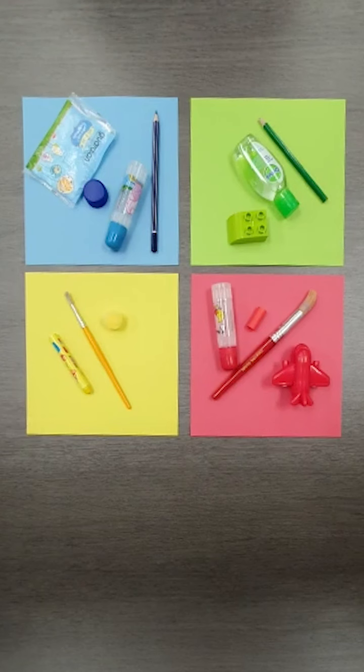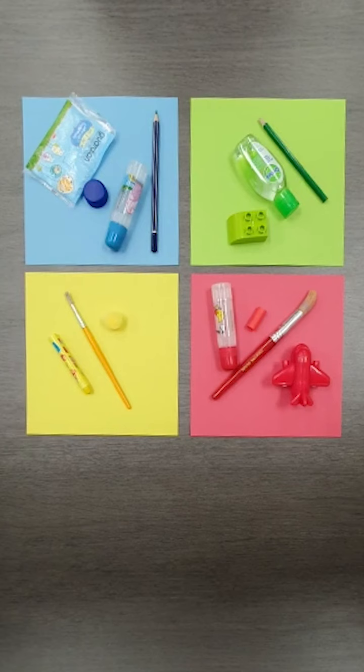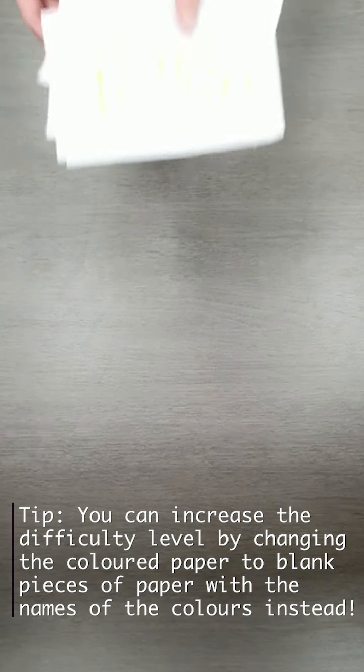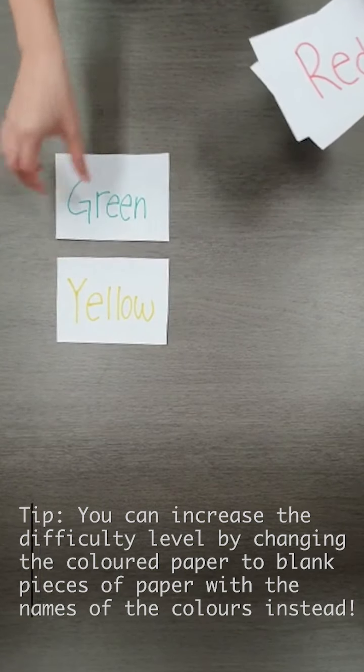So of course, give them some encouragement. Give them praise when they are done. And if you think that your children are very comfortable with this activity, they can go on to a more difficult level. You could change the base that you use. So instead of the colour paper, we can move on to blank pieces of paper with the name of the colours.